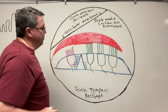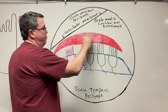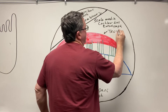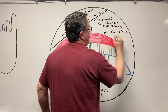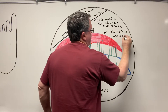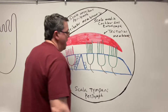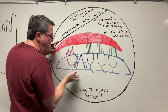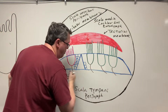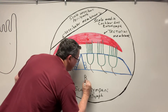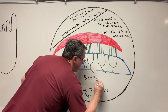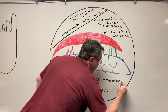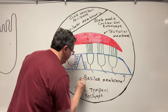Now for the organ of Corti. The first thing you notice is this big pink structure — this is a gel-like structure called the tectorial membrane. And then down here, separating the cochlear duct from the scala tympani, is this membrane going this way, which is going to be called the basilar membrane.